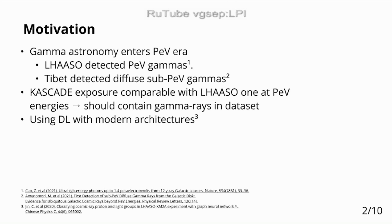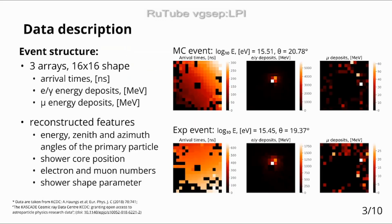The data from CASCADE consists of raw data from detector arrays — electromagnetic deposits and muon deposits, as well as their arrival times — which are 16 by 16 matrices, and also a set of reconstructed features such as energy, zenith and azimuth angles of the primary particle, shower core position, etc. We have both Monte Carlo simulations and experimental data, which have roughly the same parameters and can be compared visually.